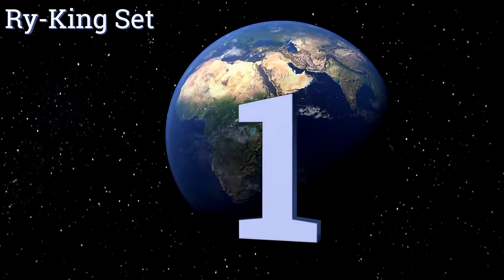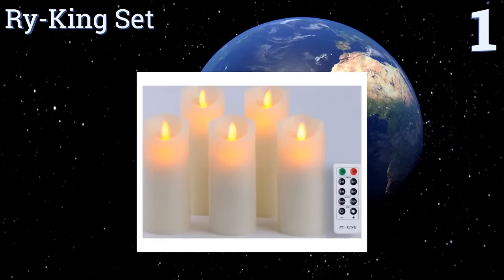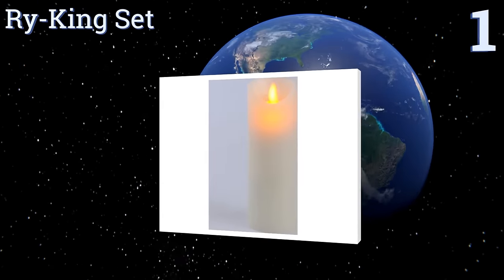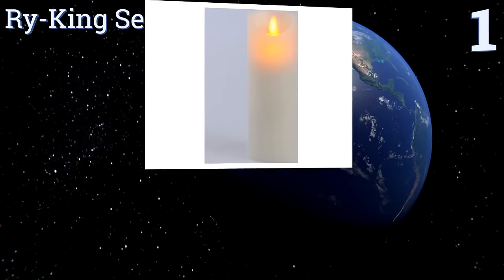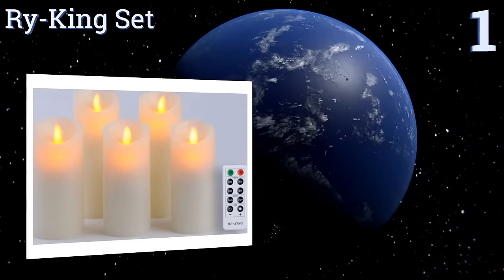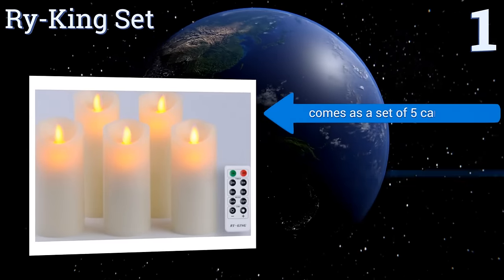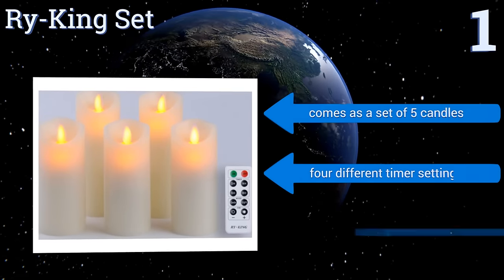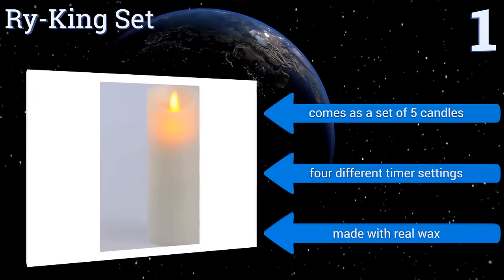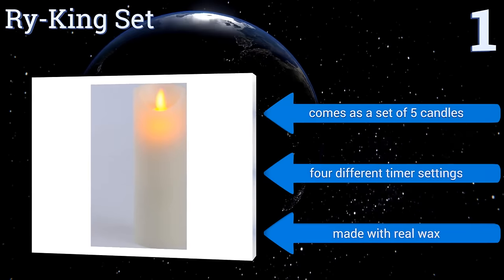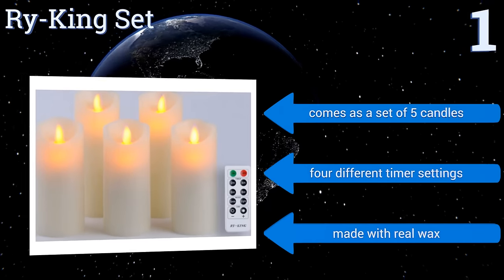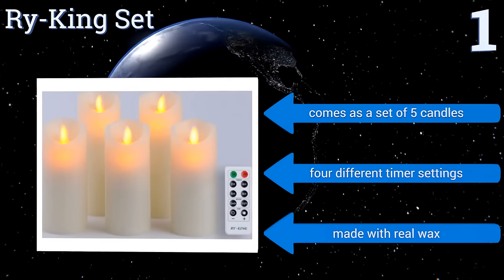And coming in at number 1 on our list, enhance the mood with the Rye King set by using the handy remote control from anywhere in the room or preset a daily schedule so they come on automatically. Their dancing flicker looks just like a real flame to keep your guests wondering why they aren't melting. It comes as a set of five candles with four different timer settings. They're made with real wax.